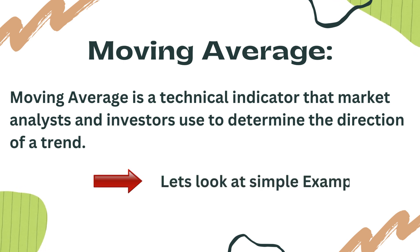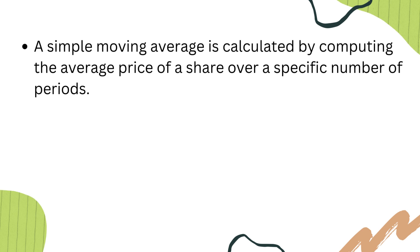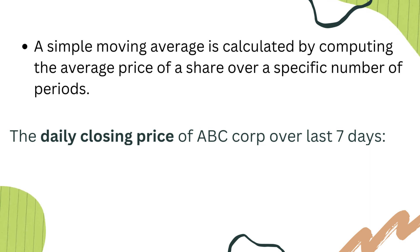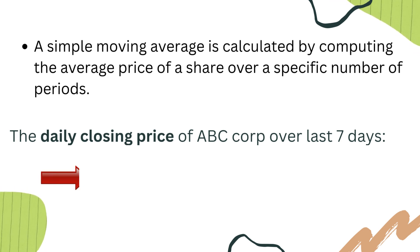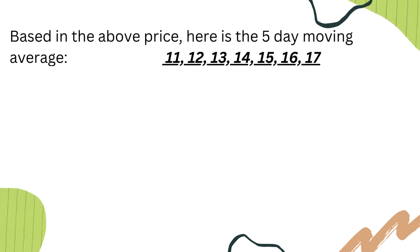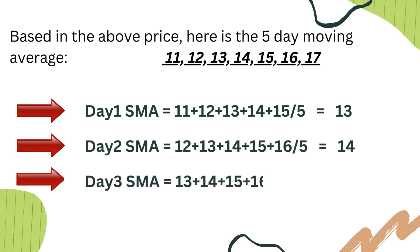Let's look at simple moving average using an example. A simple moving average is calculated by computing the average price of a share over a specific period of time. The daily closing price of ABC Corporation over the last seven days is shown above, and here is the five day moving average for day one, day two, and day three.